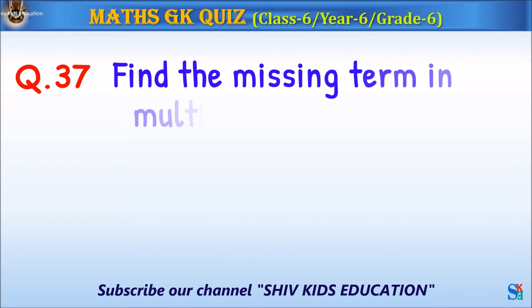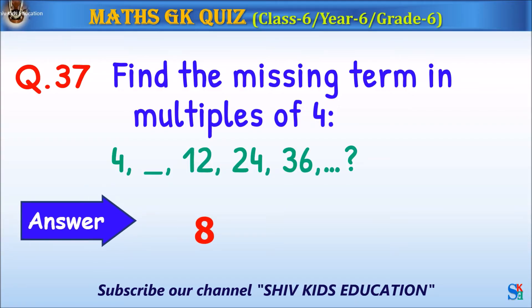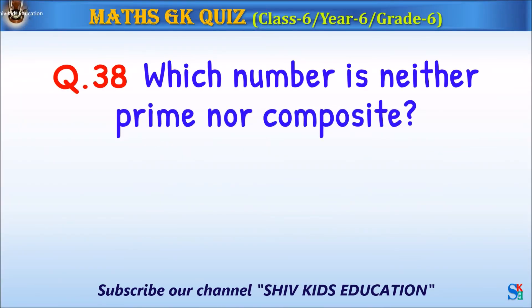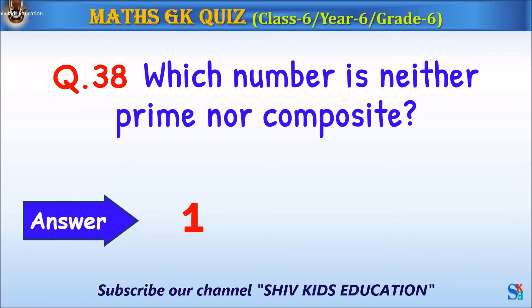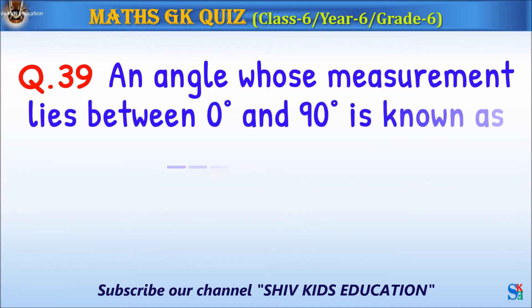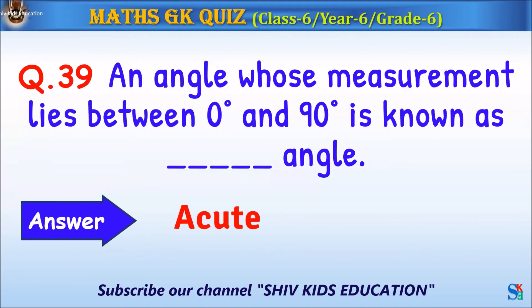Question 37: Find the missing term in the multiples of 4. The answer is 8. Question 38: (Missing term question shown on screen.) The answer is 8. Question 39: An angle whose measurement lies between 0 and 90 degrees is known as what angle? The answer is acute.